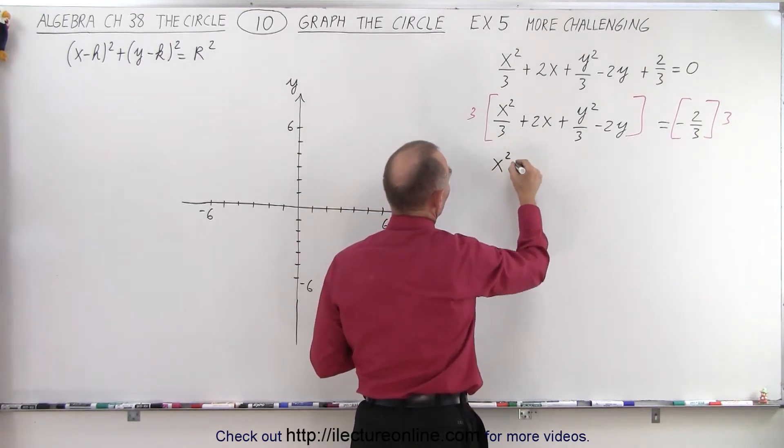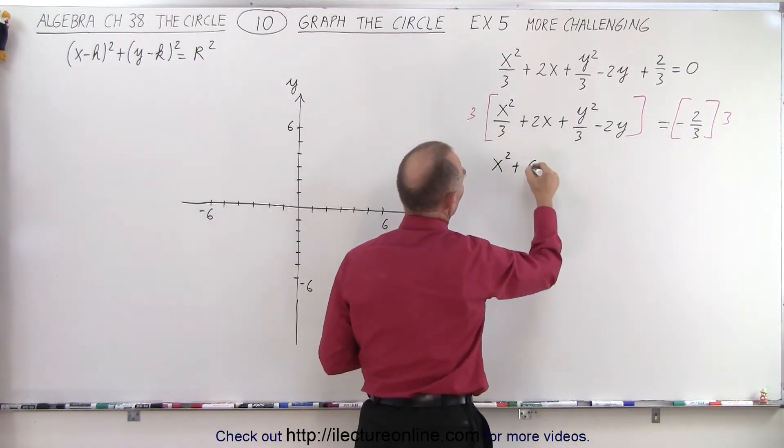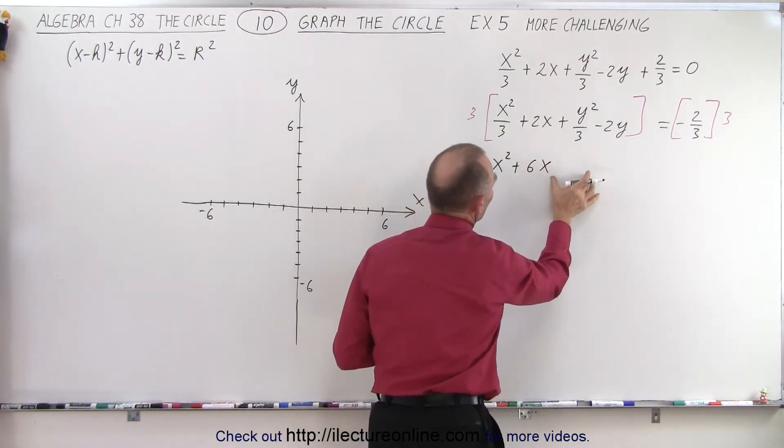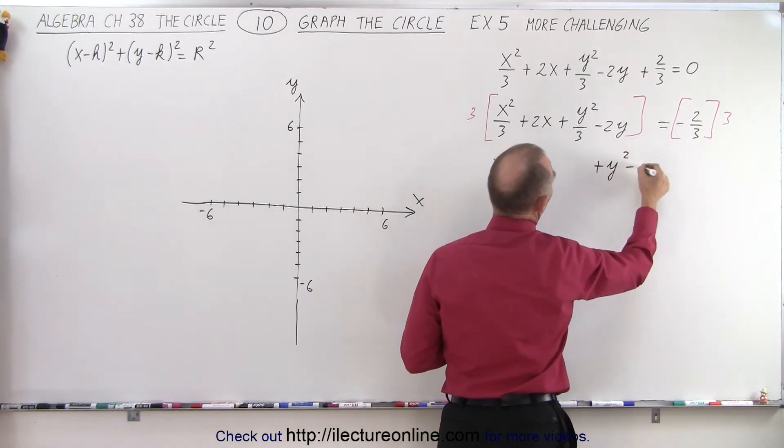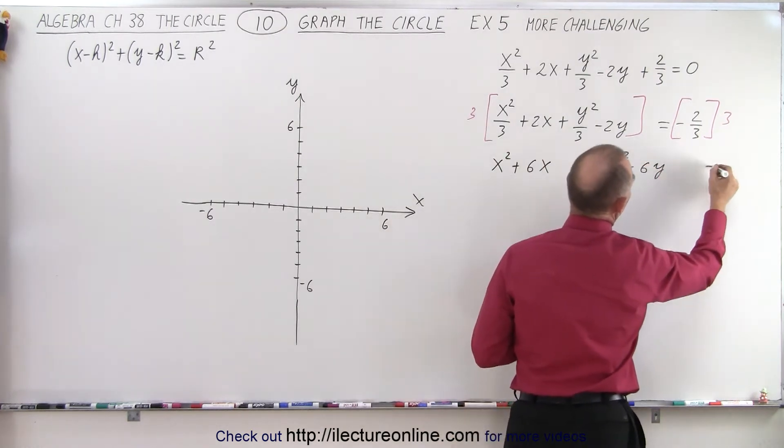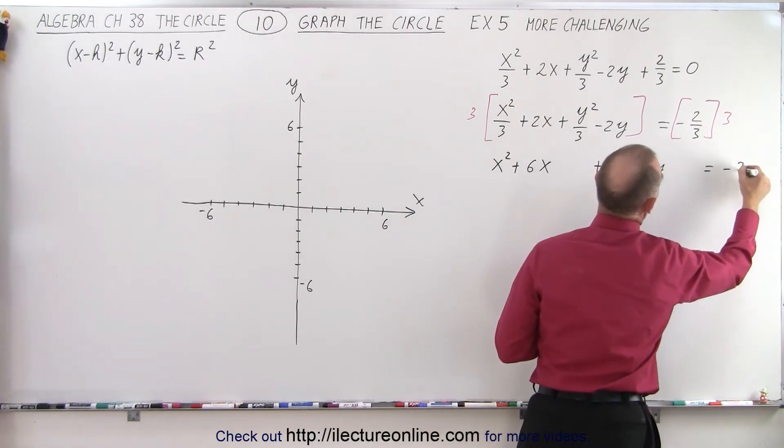The 3s cancel out. We have x squared plus 2 times 3, which is 6x. I'm going to leave some room here. Then plus y squared minus 6y, leave some room, equals minus 2.